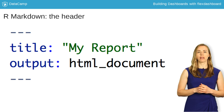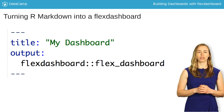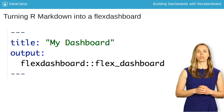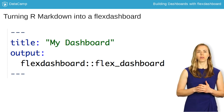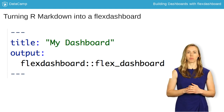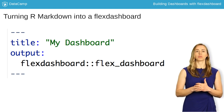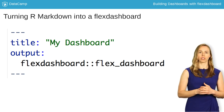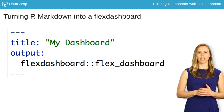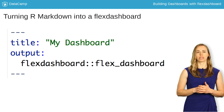So you might have guessed how we make our R Markdown file become a Flex Dashboard. We change the output type to flex_dashboard. You'll usually see this as output: flexdashboard::flex_dashboard, which makes it extra clear that this output option comes with the Flex Dashboard R package. With this option set, your R Markdown file will be interpreted as Flex Dashboard syntax.